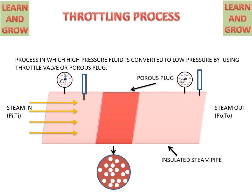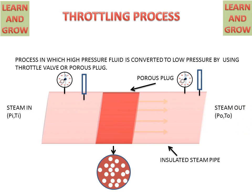Now we see the working of the throttling process. When steam passes through the porous plug, the pressure of the steam decreases and the temperature also shows some decrease. This is called throttling of steam, because in this process we are converting high pressure steam to low pressure steam.